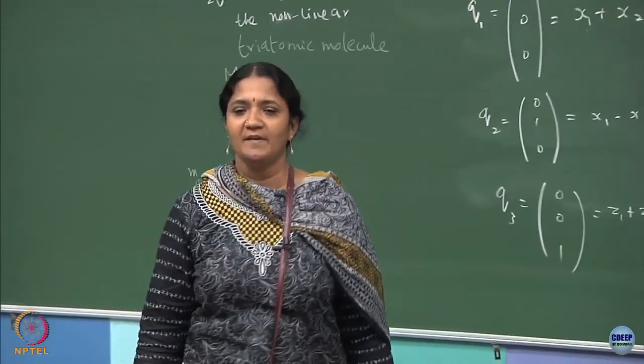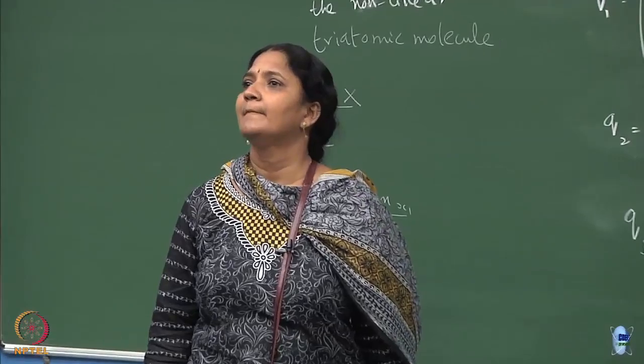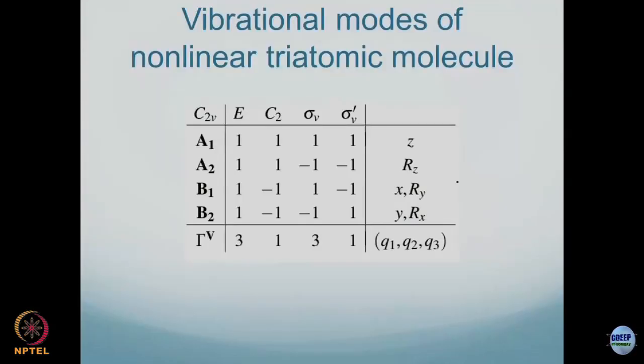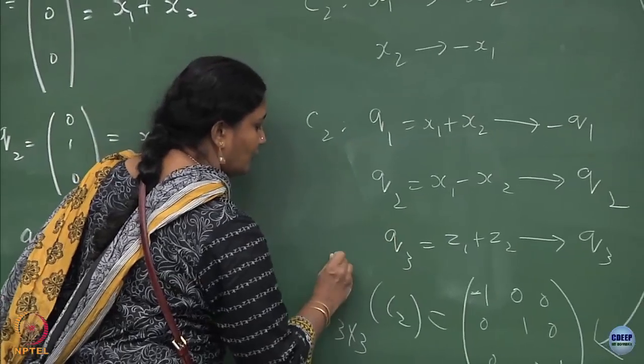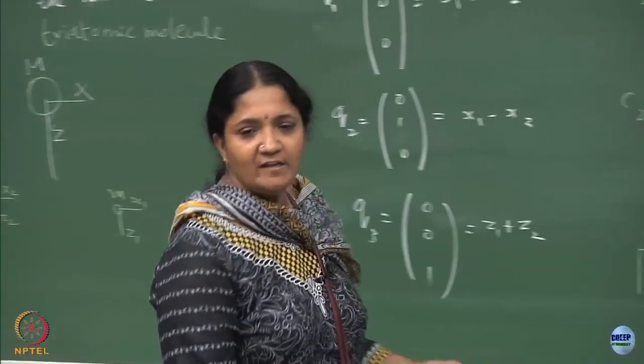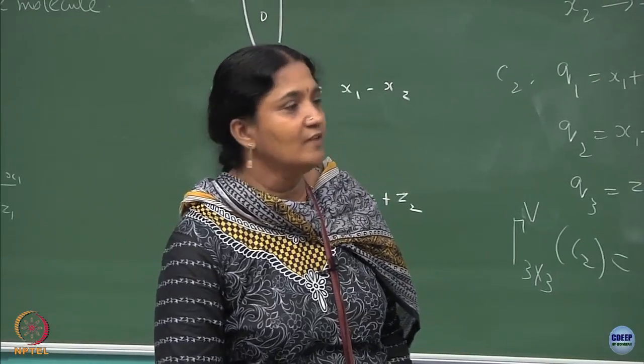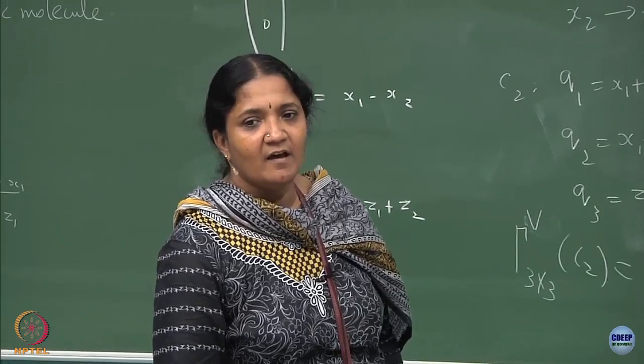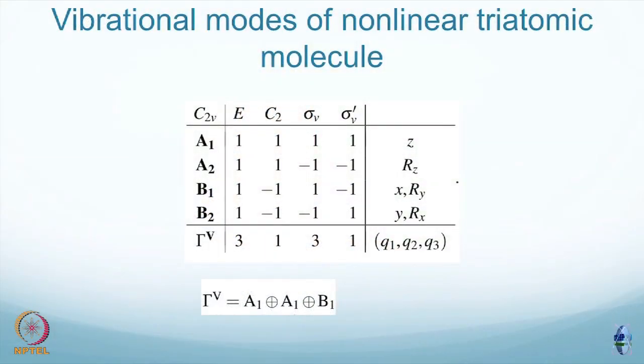Back to our character table, basis states and so on. This representation reducible - I am calling it gamma V. You can find the particular characters for the identity element - of course, trace of the 3 cross 3 matrix is identity. The xz plane will also be an identity matrix, so that trace is also 3.